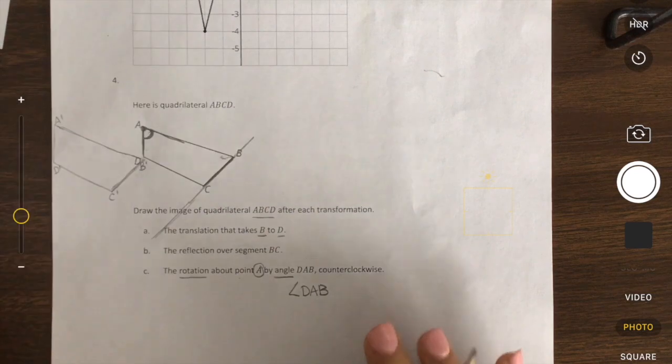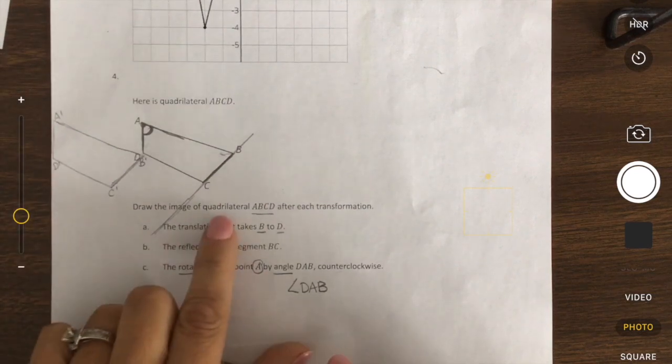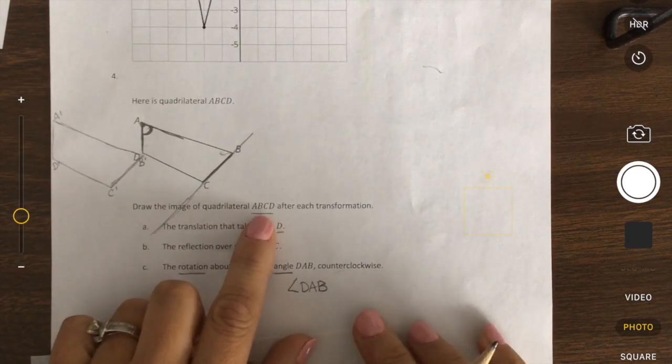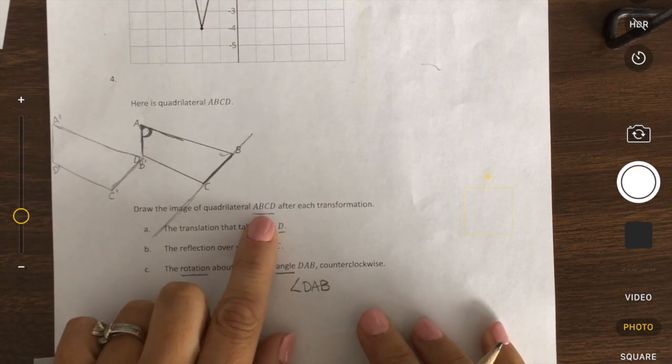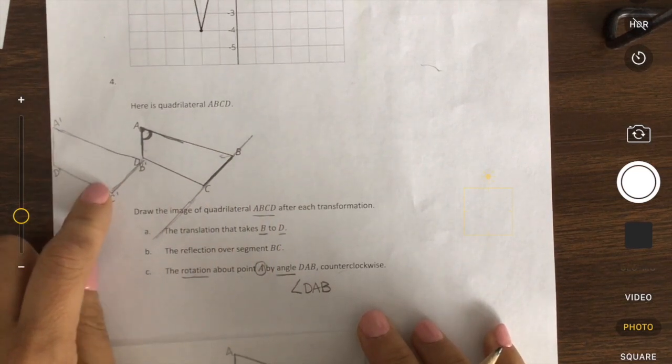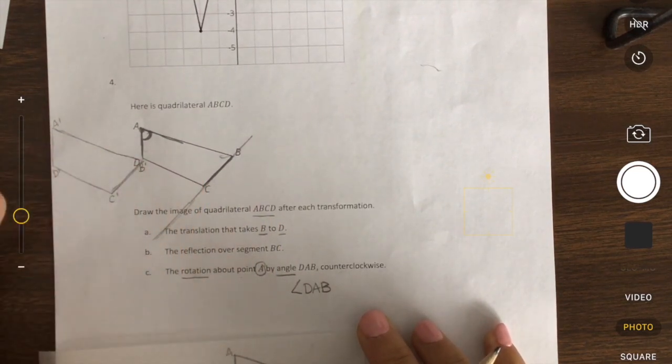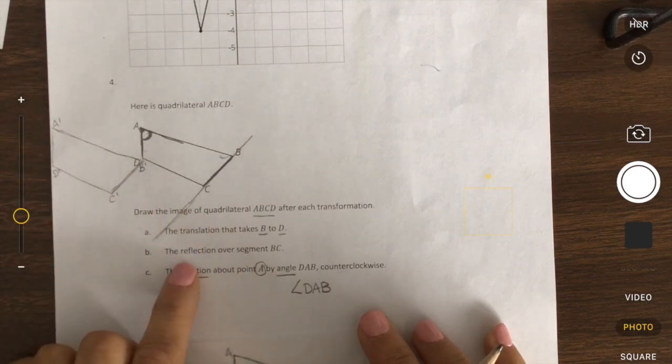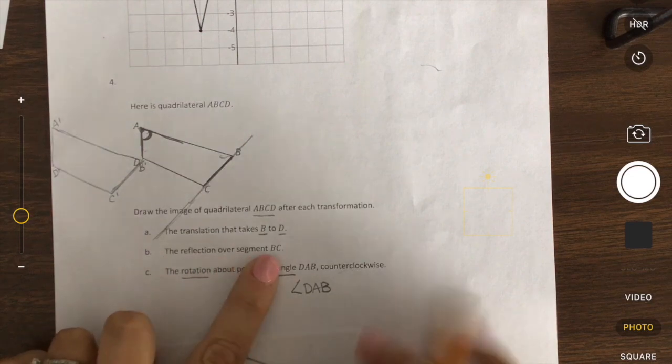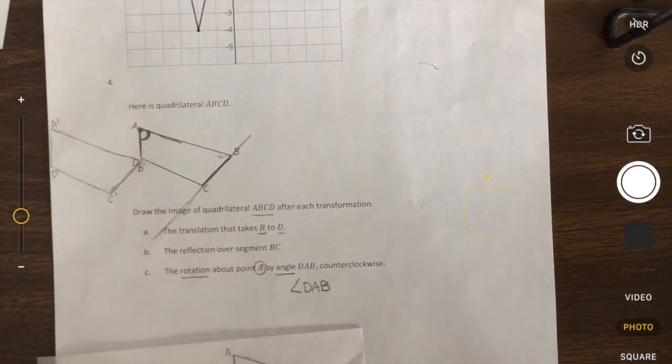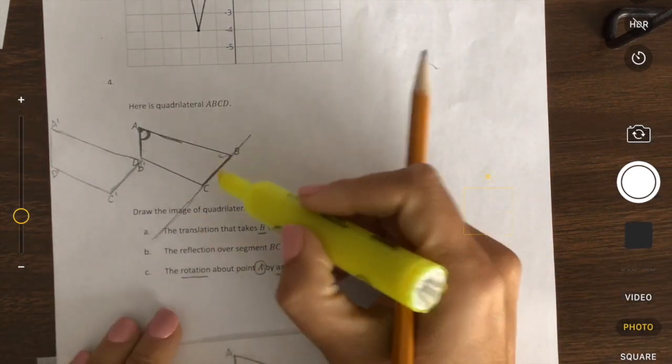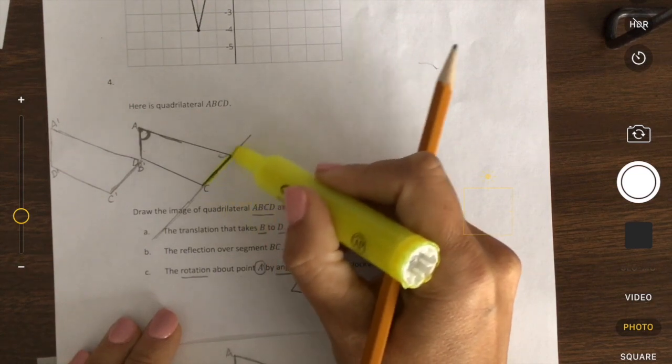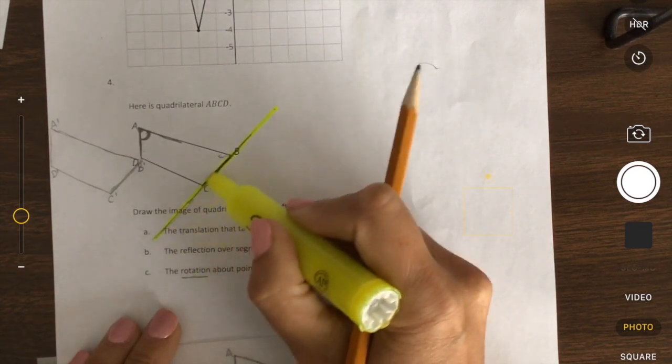Now our second piece we're going to take and think about we're taking the same beginning image. Now it's not very specific on if it wants you to take it from the pre-image each time, but we're going to take it from the pre-image each time to kind of help you make sense of it. So the second piece we're going to reflect over segment BC. So I've already drawn a little line here and we'll highlight it. This is segment BC, and I'm going to extend it out a little bit so we can kind of see.